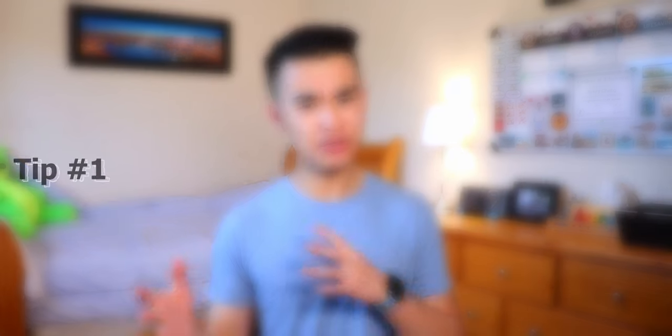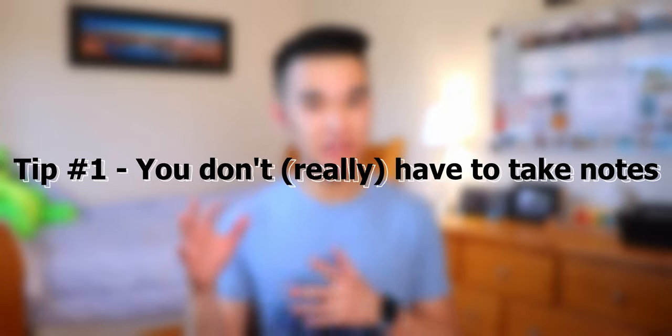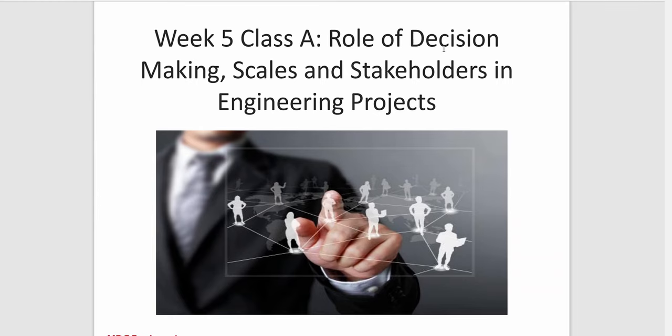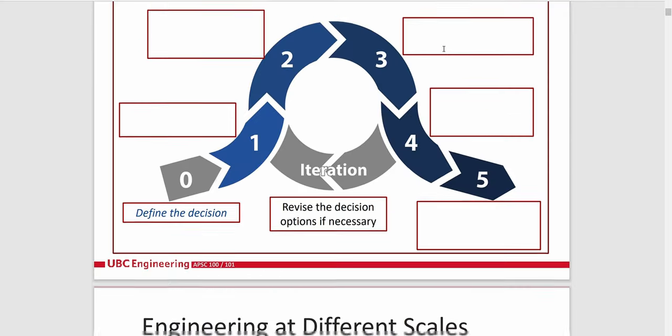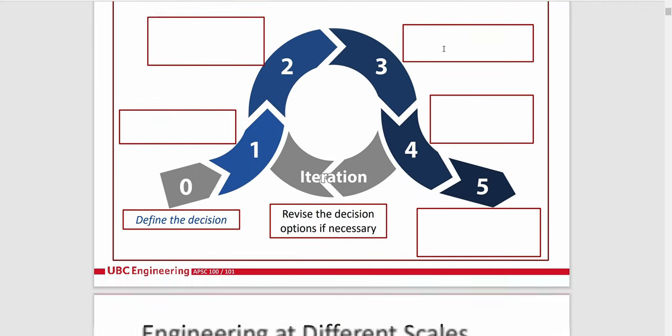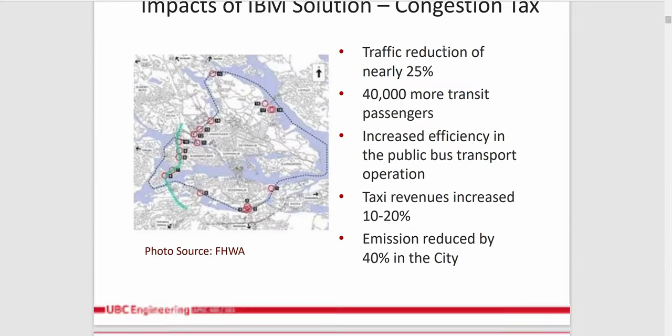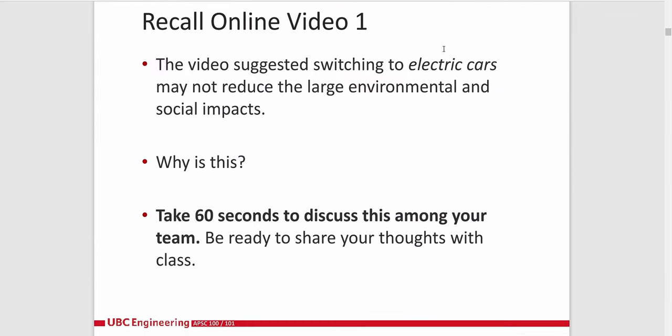That was a lot of course information all at once, so let's end this video with some survival tips to help you get through AppSci 100 and 101. First, these are two classes that you don't really have to take many notes for because they pretty much give you all of the information you need on the Canvas page. For each module, the AppSci team posts skeleton notes, which are pretty much slightly watered-down versions of the lecture slides for you to annotate and reference during lectures, but it's completely optional.